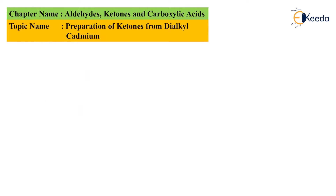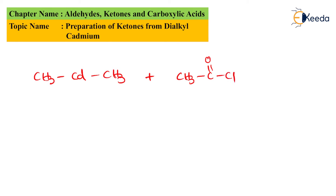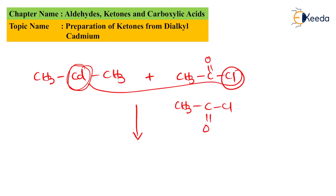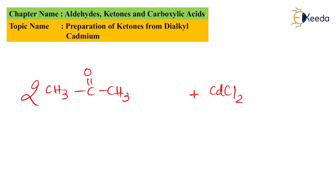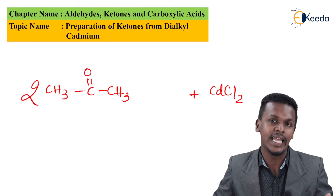Let me give a specific reaction. Consider dimethyl cadmium, CH₃CdCH₃, reacted with ethanoyl chloride, CH₃C(=O)Cl — and we use two molecules of CH₃C(=O)Cl. The reaction proceeds such that cadmium takes away both Cl atoms, giving byproduct CdCl₂. The main product becomes CH₃C(=O)CH₃, and we get two moles of acetone.